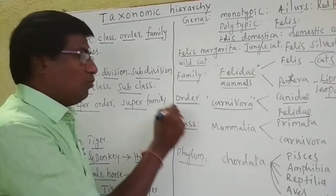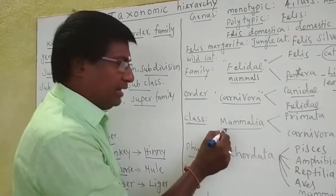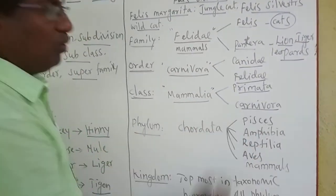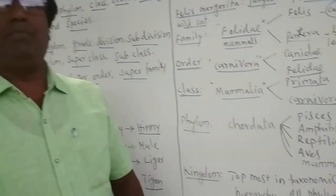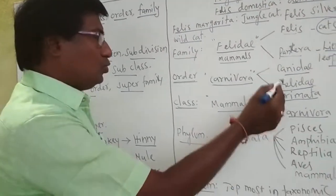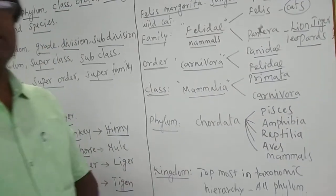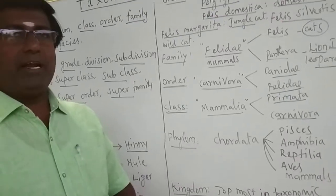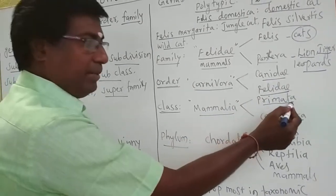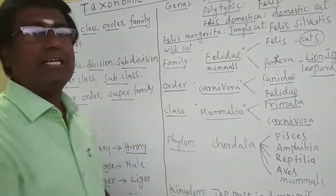The next one is the class. One or more closely related orders are put into one class. For example, the class Mammalia contains two orders: Primata and Carnivora. Primata includes apes, monkeys, and humans. Carnivora includes lion and cat. Both orders are placed in Mammalia because both have mammary glands — they are milk-giving animals.